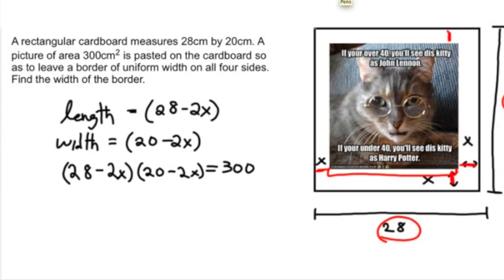So to set up my equation, I'm going to set it up as (28 - 2x) times (20 - 2x) equals 300.